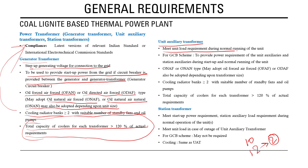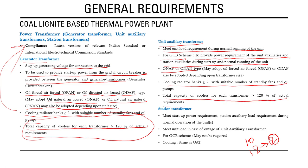The unit auxiliary transformer meets the unit load requirement during normal running of the unit. In a GCB scheme, it also provides power requirements to unit auxiliary and station auxiliary during startup and normal running. The station transformer meets the startup power requirement, station auxiliary load during normal operation, and the unit load in case of outage of the unit auxiliary transformer.